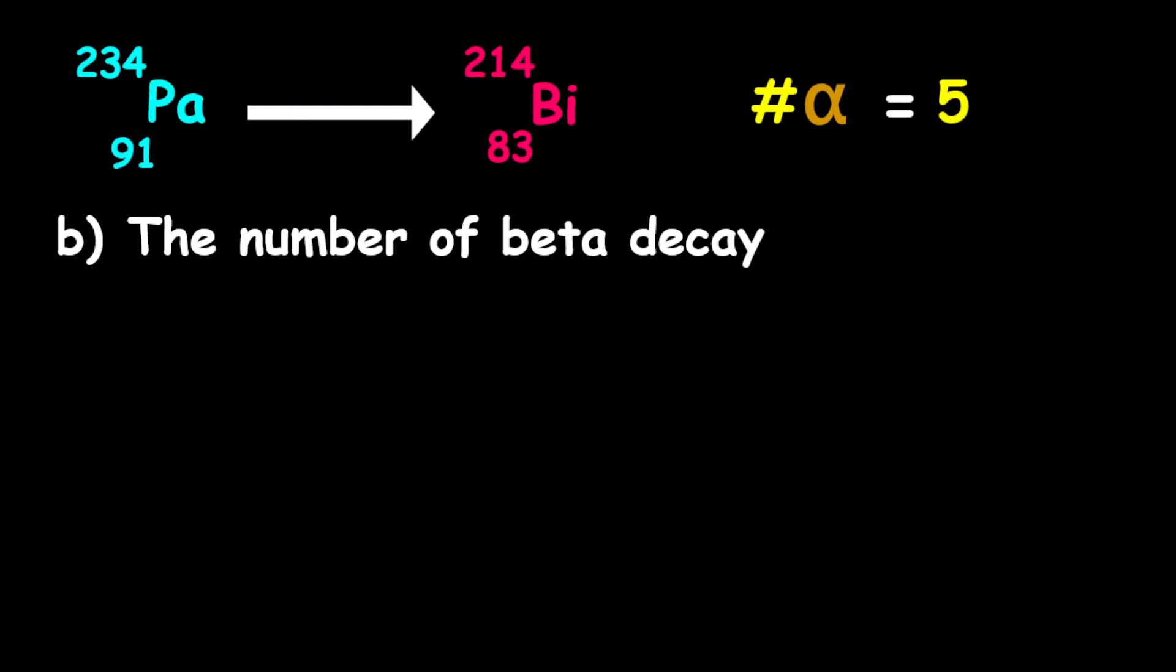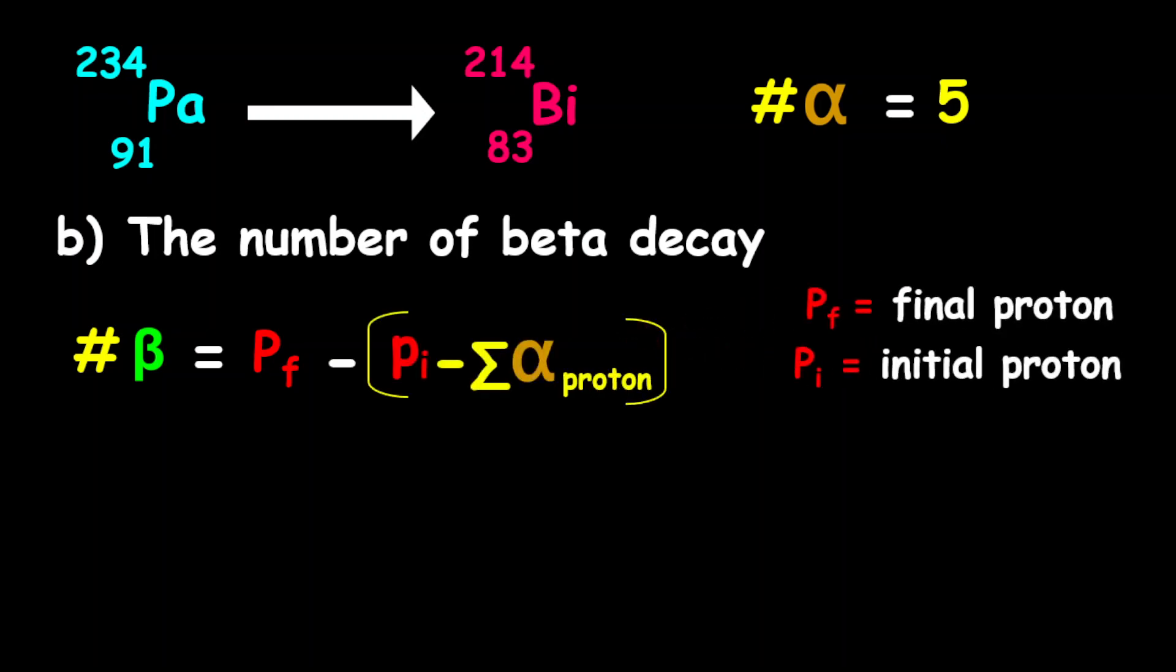Now to find the number of beta decay, remember that the beta only affects the proton. However, alpha particles also affect the proton number as well. So the equation that we can use here is that the number of beta particle is equal to the final proton minus the initial proton minus the total number of protons in the alpha decays.